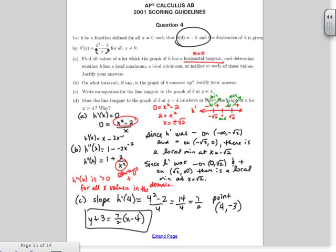And then part D says, Does the line tangent to the graph of h at x equals 4 lie above or below the graph of h for x is greater than 4? Why? So this is kind of a tricky one. If you remember the definition of concavity, this is what we talked about.